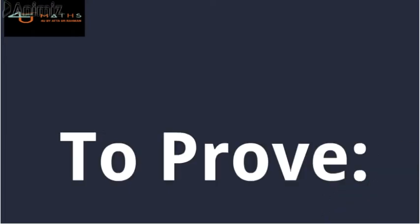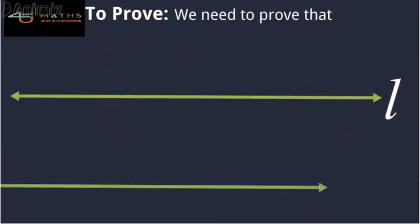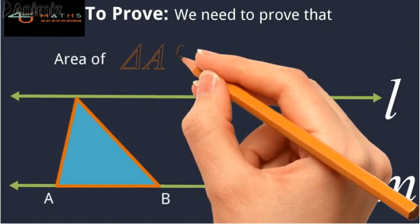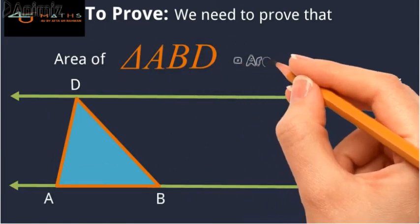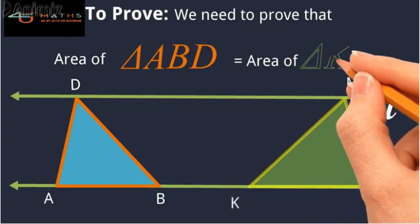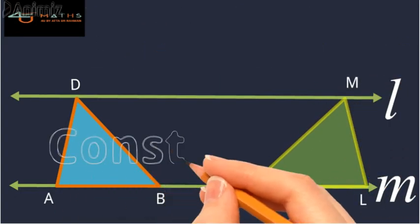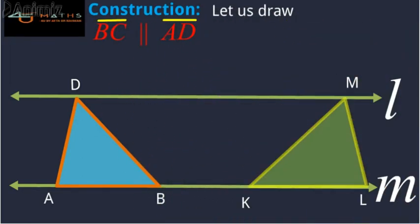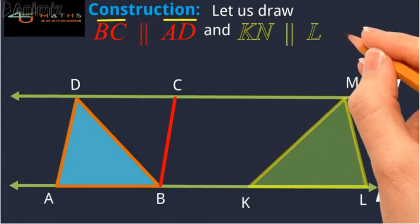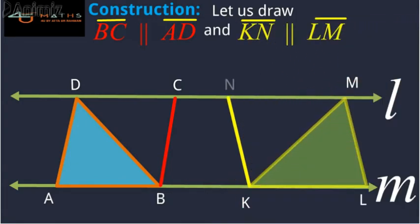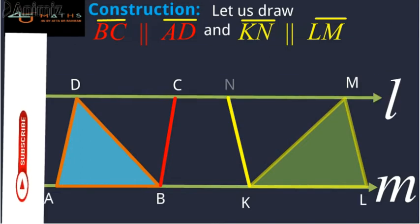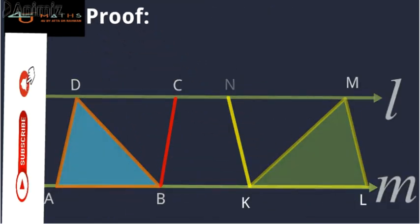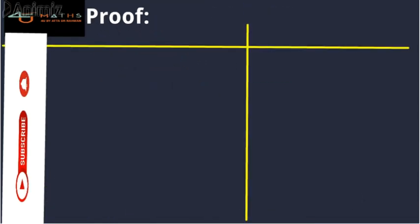To prove: We need to prove that the area of triangle ABD is equal to the area of triangle KLM. Construction: Let us draw BC parallel to AD and KN parallel to LM. They intersect the line L at C and N respectively.